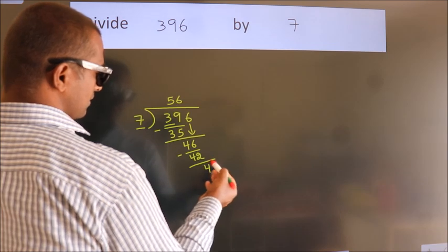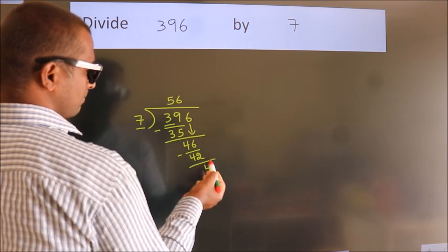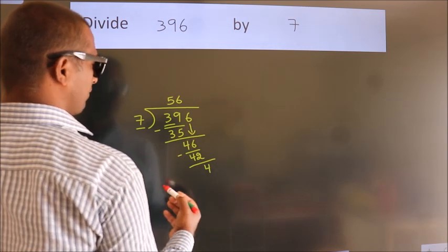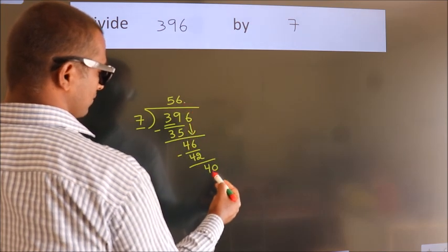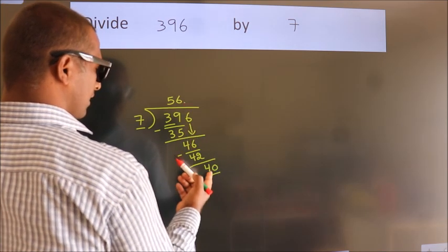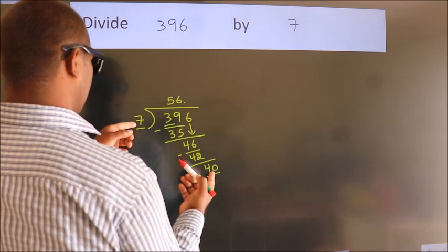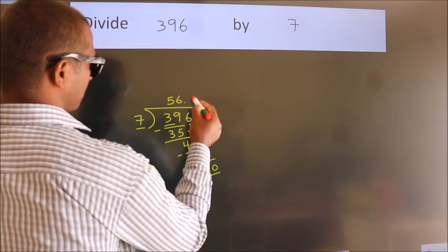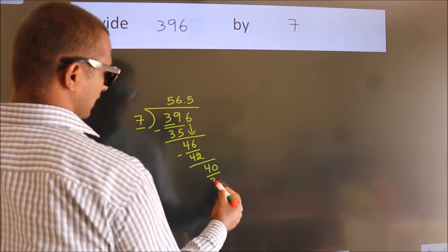After this, no more numbers to bring down. So what we do is put a dot and take 0, giving us 40. A number close to 40 in the 7 table is 7 fives, 35.